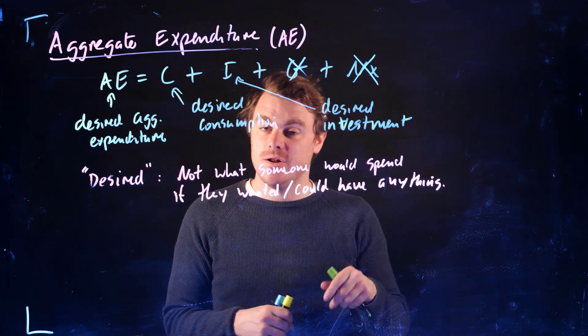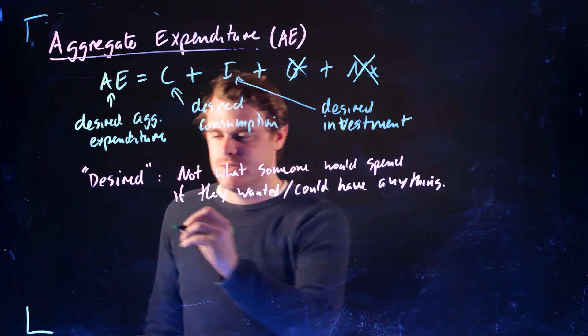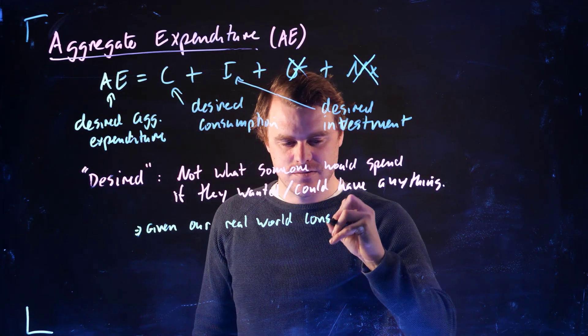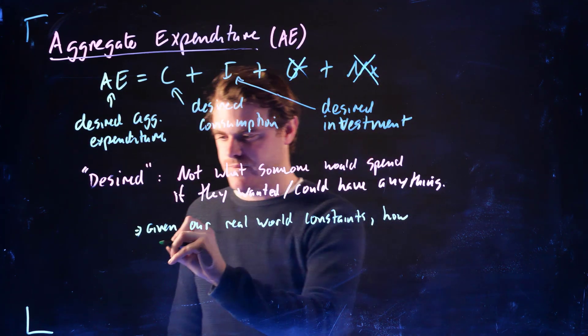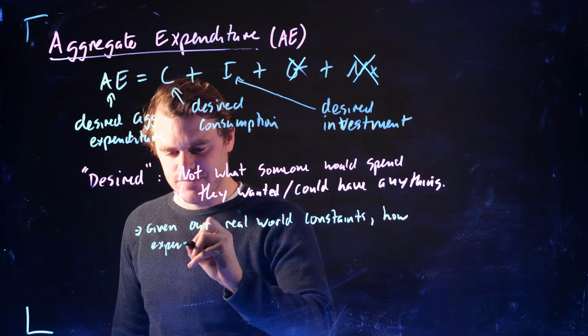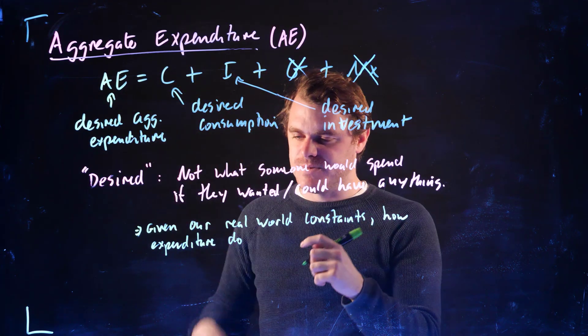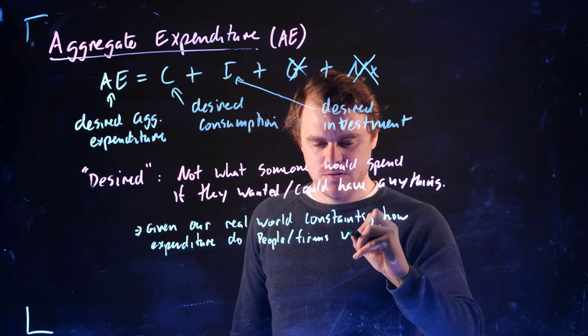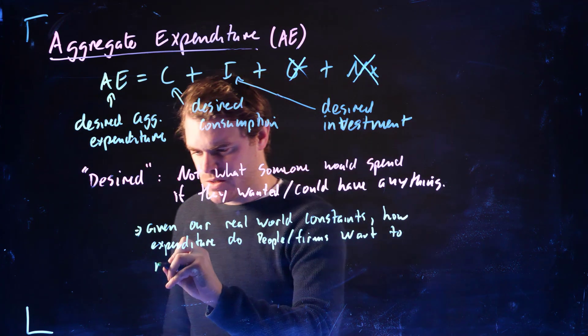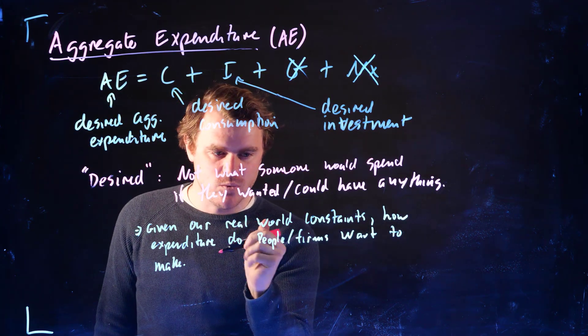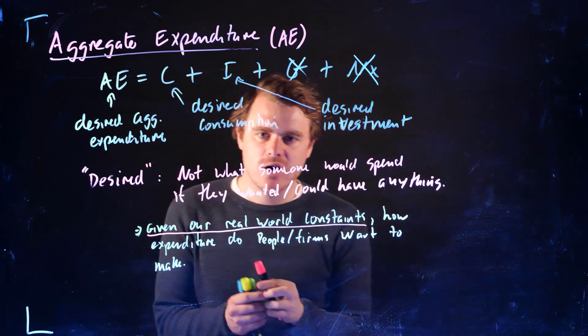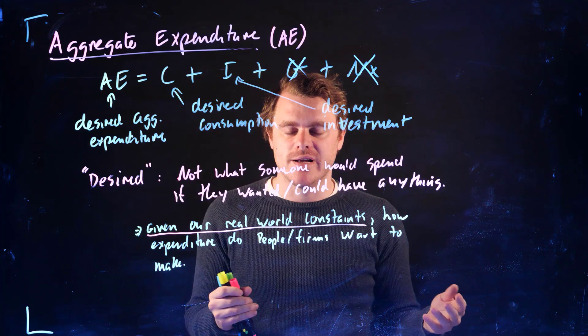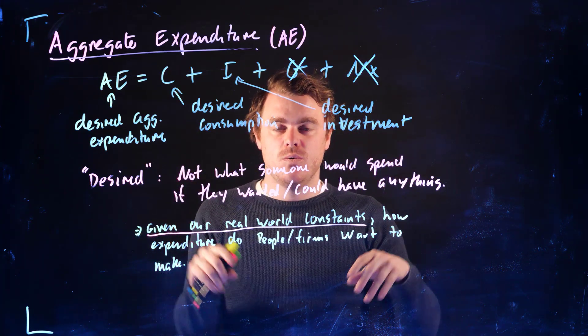What desired means here is that, given our real world constraints, so given our real world constraints, how much expenditure do people or firms, do people slash firms want to make? So the key is, given our real world constraints, we are constrained in terms of what our choices are. It's much more realistic than, hey, if you could have anything in the world, what do you want? No, it's given our constraints, what do we want to do?